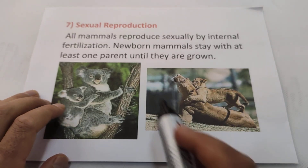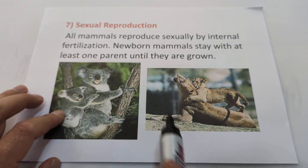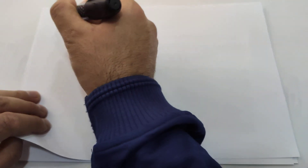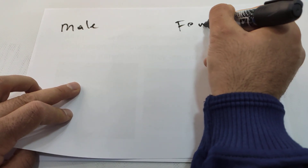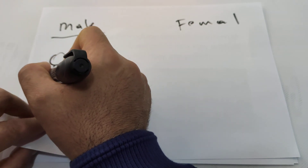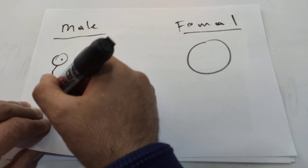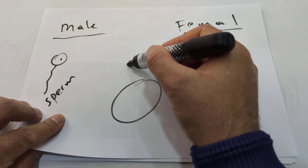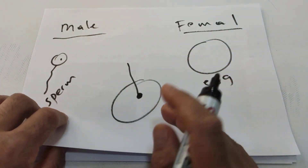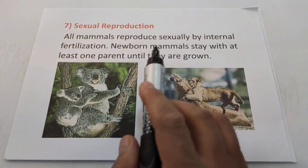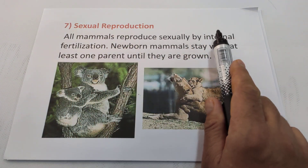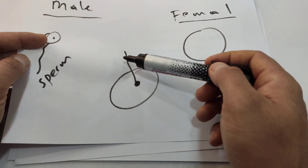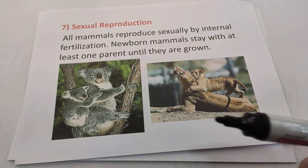Another characteristic of mammals is sexual reproduction. All mammals reproduce sexually — that is, involving male and female. The male has sperm and the female has eggs. When one sperm and one egg join together, we call that fertilization. There are two kinds: internal fertilization, where sperm and egg join inside the female body, and external fertilization, where sperm and egg join outside the body.